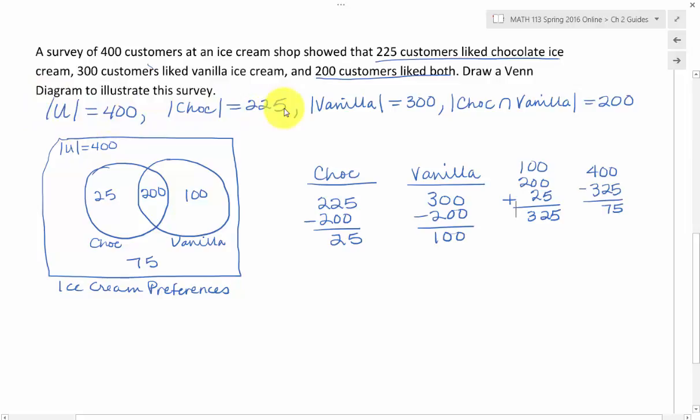The cardinal number for chocolate was 225, for vanilla is 300, and for chocolate intersect vanilla, meaning they liked both, was 200.